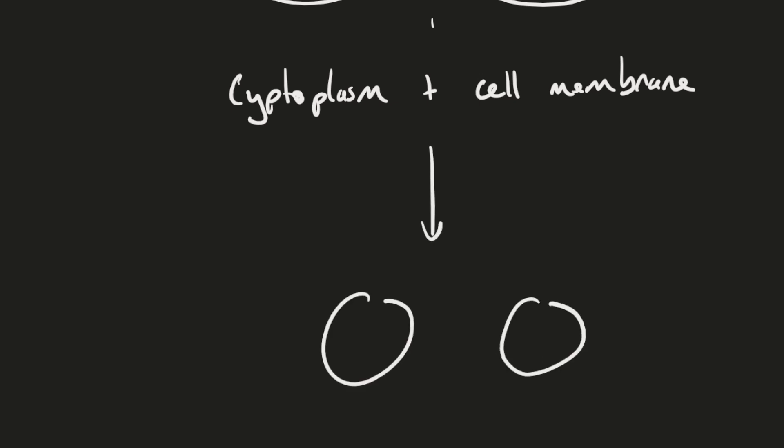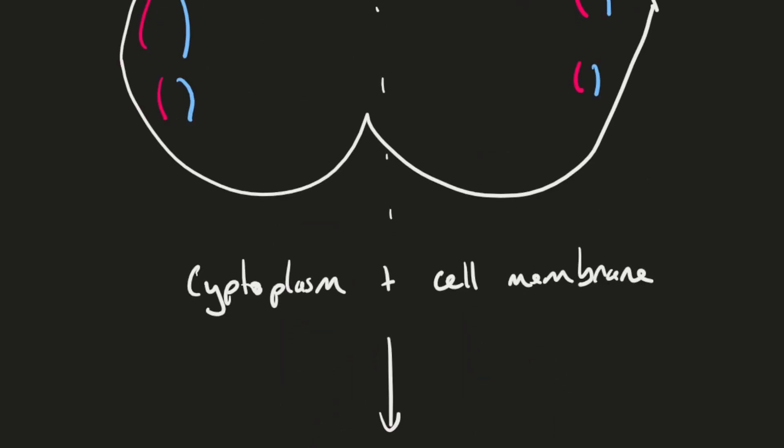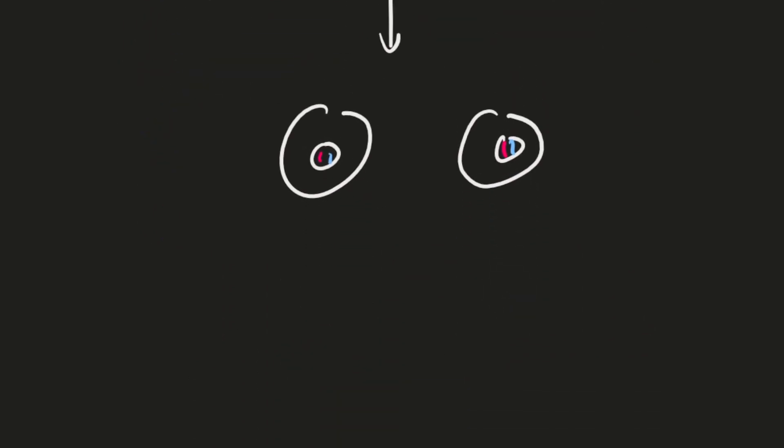Now you've got two cells, each with their nucleus. The nucleus then reforms, and as usual you have all the genetic material you started with. All the chromosomes are now in the nuclei of the two new daughter cells. That essentially is mitosis.